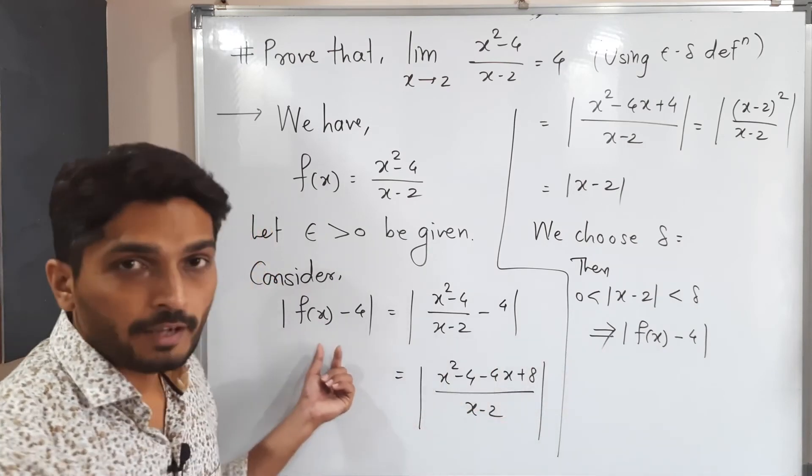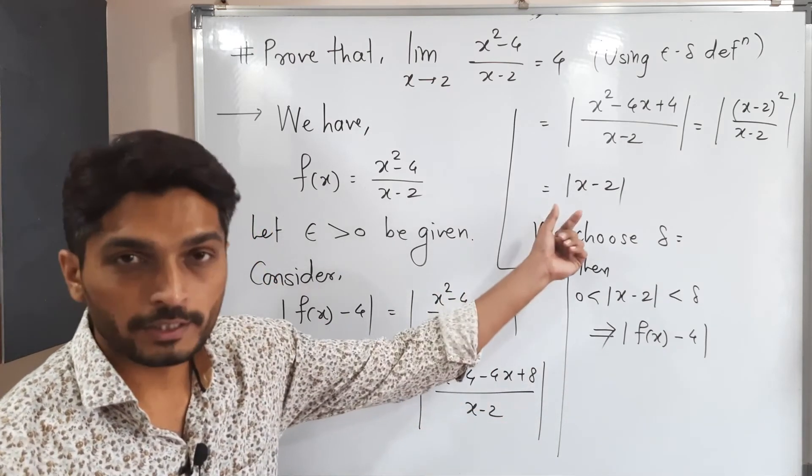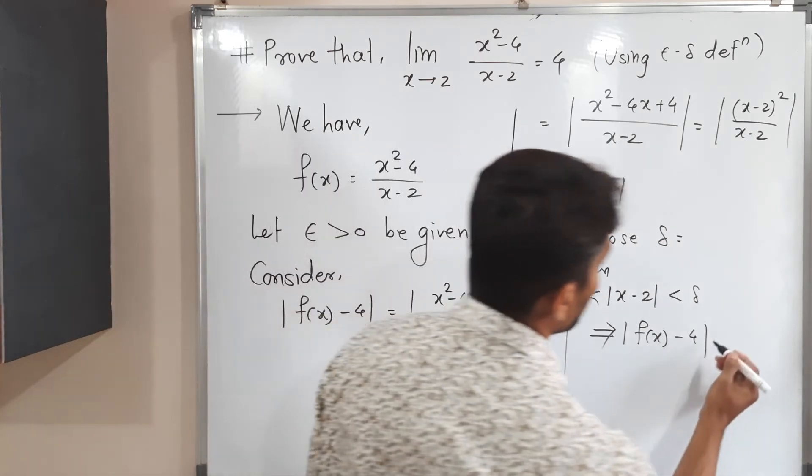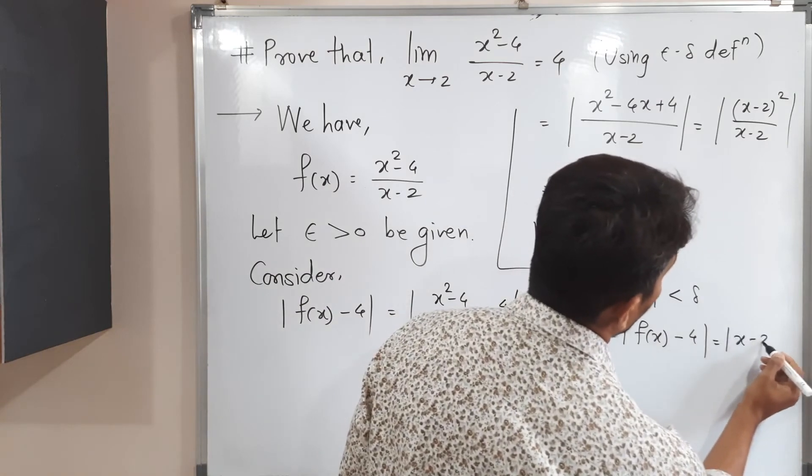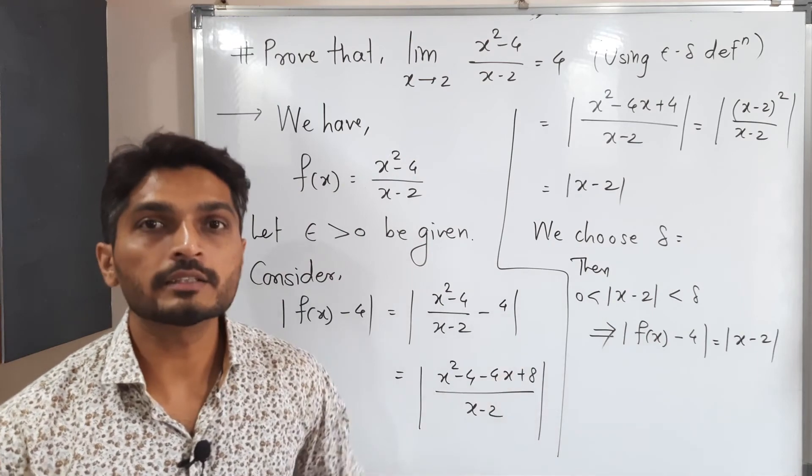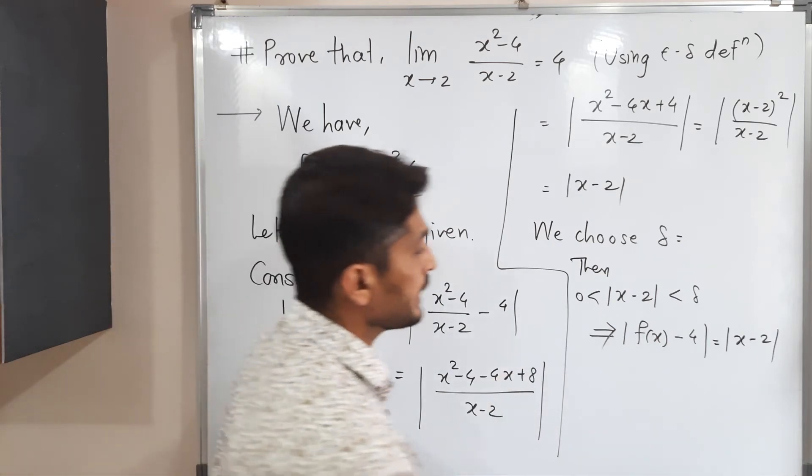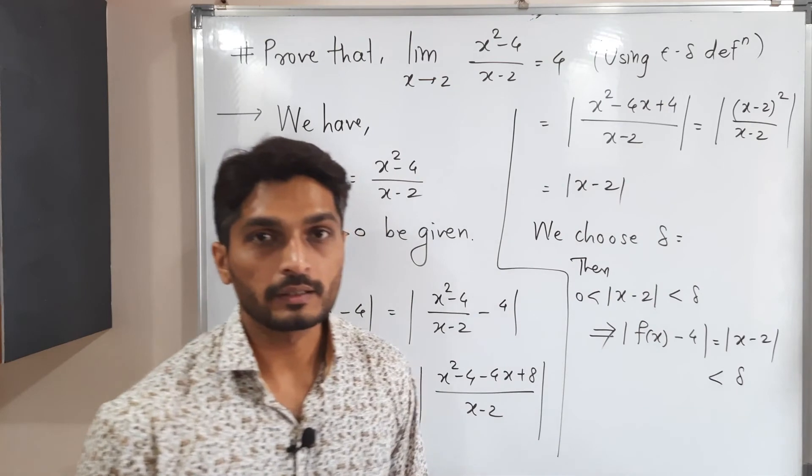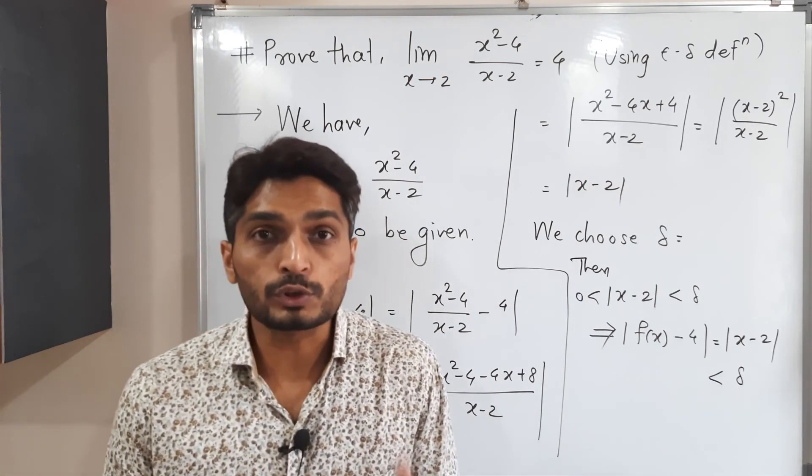This value already we have calculated. And we have got it is mod x minus 2. So let me write that thing mod x minus 2. Here also we have mod x minus 2. And we have already written it is less than delta. So it will be less than delta.